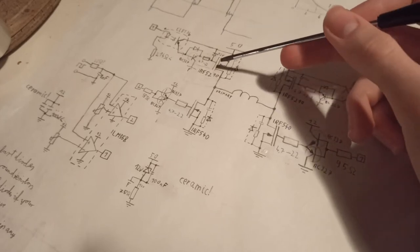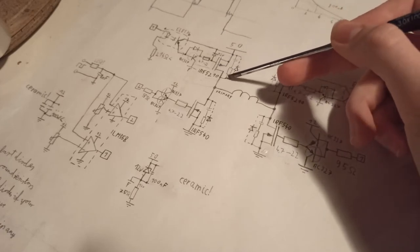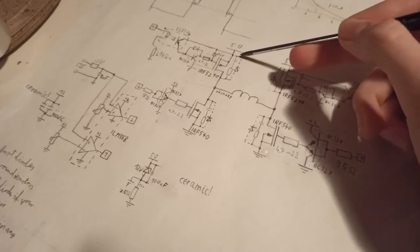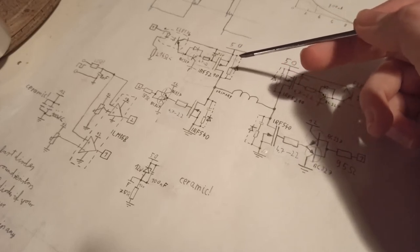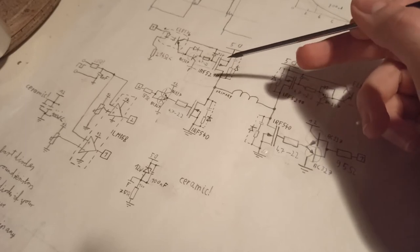If your MOSFETs or IGBTs don't have internal built-in diodes, use an external one. Those will help to protect the transistors against the high overshoots.